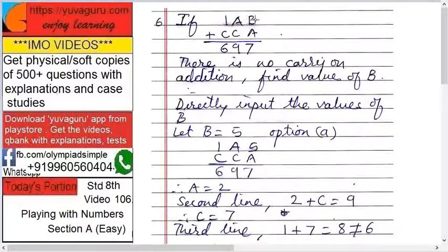If 1AB plus CCA equals to 697 and there is no carry-on addition, find the value of B.